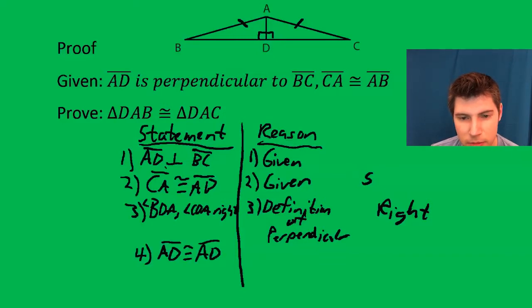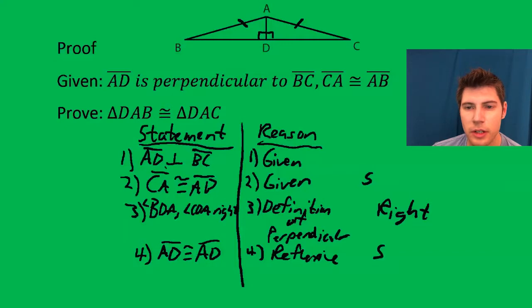Next step. By reflexive, I know that AD equals AD. The reason is reflexive. And so now I have another set of sides.